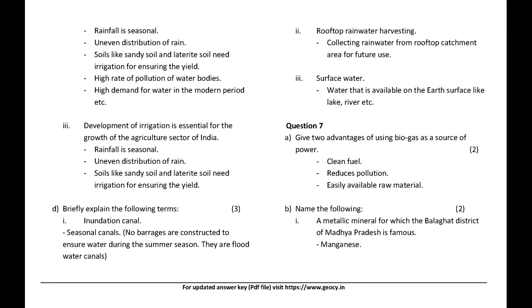Development of irrigation is essential for the growth of the agriculture sector of India because rainfall is seasonal, rain is unevenly distributed, and soils like sandy soil and laterite soil need irrigation for ensuring yield.